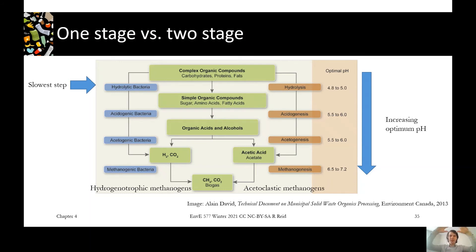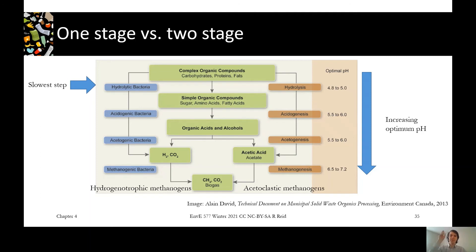So that's what's going on. In a plug or a batch, all of that would be happening together in the waste. In a continuously stirred wet process, you'd have material of different ages trying to go through these steps at different times, which is why it might be useful to split it into two stages.